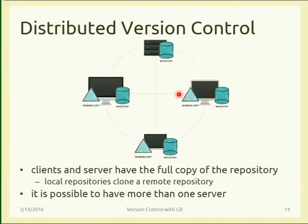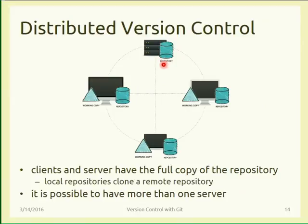To overcome these and other problems, distributed version control systems were born. In a distributed version control system, each computer has a working copy and a repository, so all clients have a full copy of the repository plus the working copy in which they work. Then, typically — though it's not mandatory — you can have one or more central remote repositories, a repository on a server or online service where you put your code and other people can read and download.